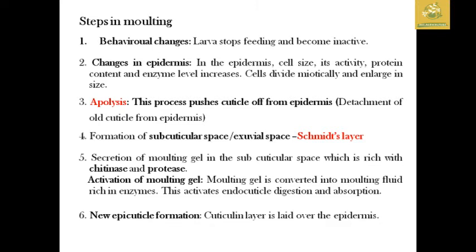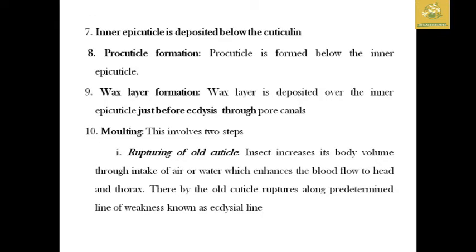The final process involves new epicuticle formation, where the cuticular layer is overlaid on the epidermis. The inner epicuticle is deposited between the old cuticle and the forming procuticle. The procuticle forms below the inner epicuticle. A wax layer is also deposited just before ecdysis, secreted through dermal canals.